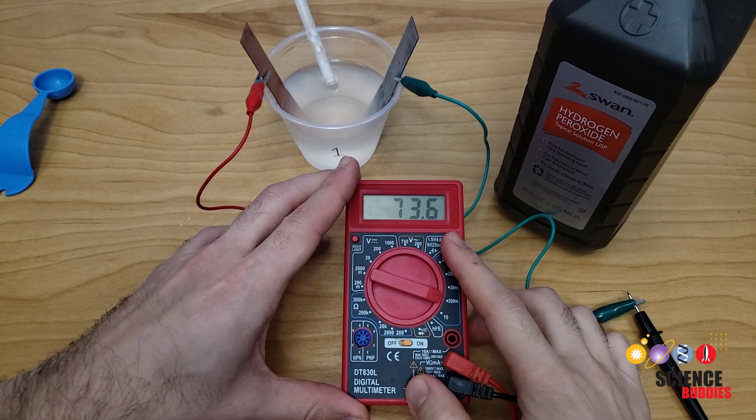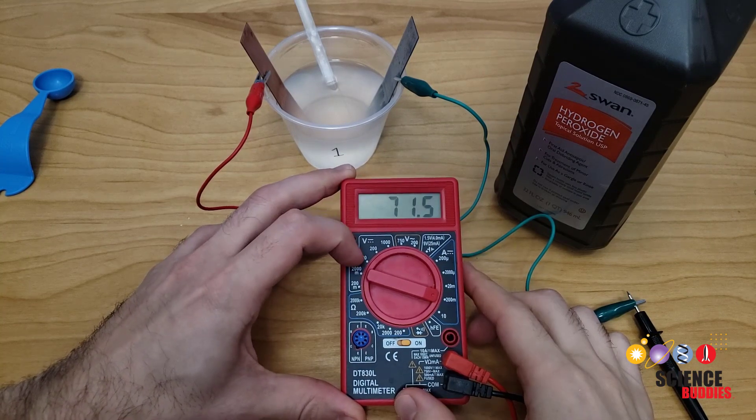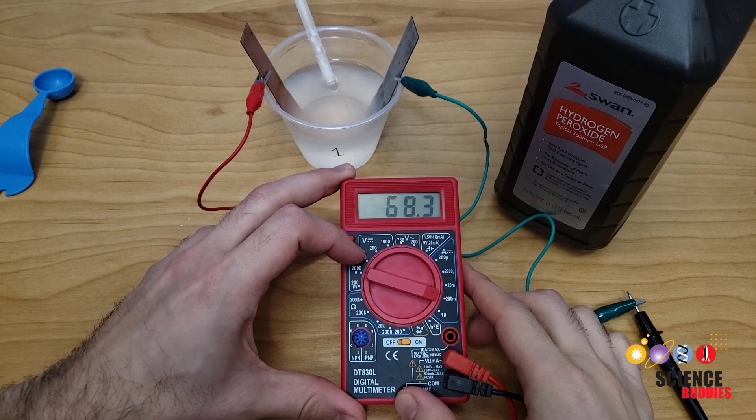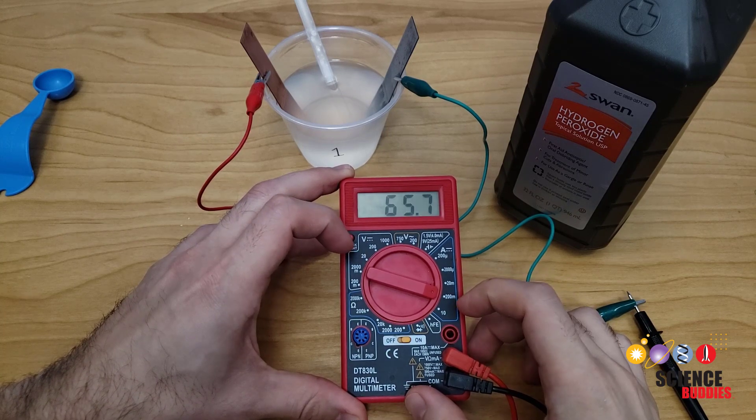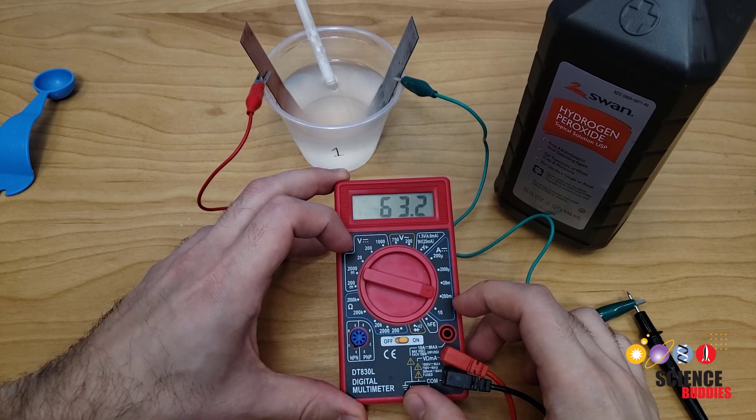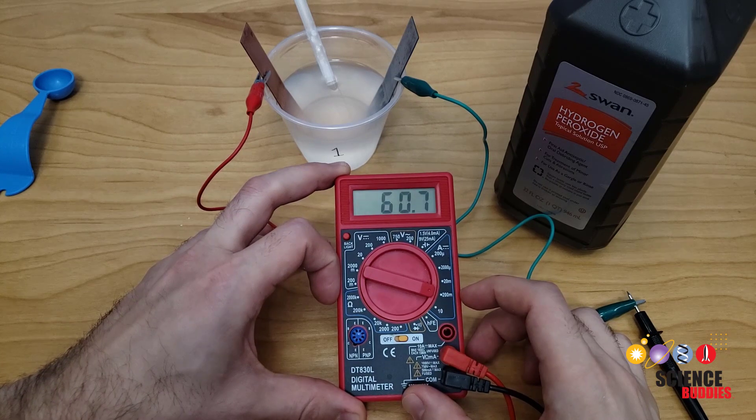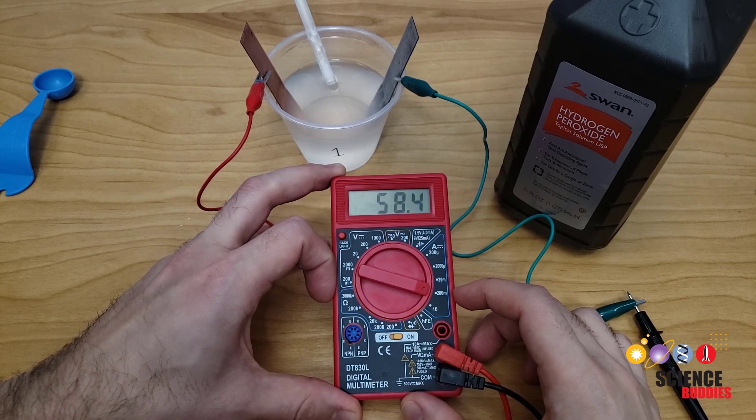After waiting three minutes for the reading to stabilize, you will again switch back to the DC voltage measurement setting, record the voltage, then switch back to the 200 milliamp current setting, wait another five minutes for the reading to stabilize, and move on to the next step.